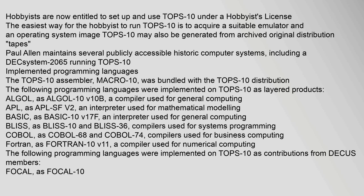The TOPS-10 assembler, Macro-10, was bundled with the TOPS-10 distribution. The following programming languages were implemented on TOPS-10 as layered products: Algol as Algol-10v10b, a compiler used for general computing; APL as APL-SFv2, an interpreter used for mathematical modeling; BASIC as BASIC-10v17f, an interpreter used for general computing; BLISS as BLISS-10 and BLISS-36, compilers used for systems programming; COBOL as COBOL-68 and COBOL-74, compilers used for business computing; and FORTRAN as FORTRAN-10v11, a compiler used for numerical computing.